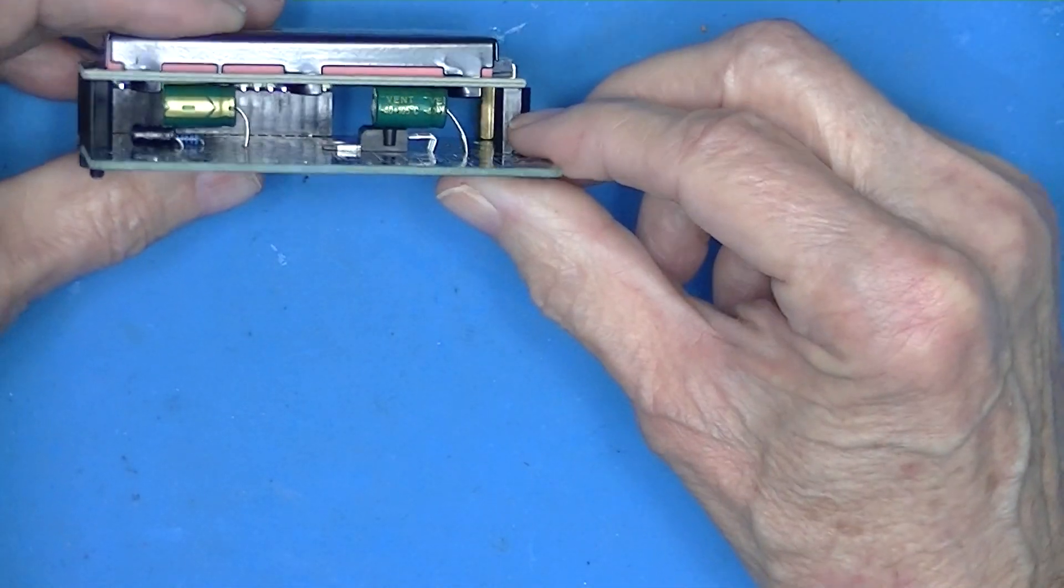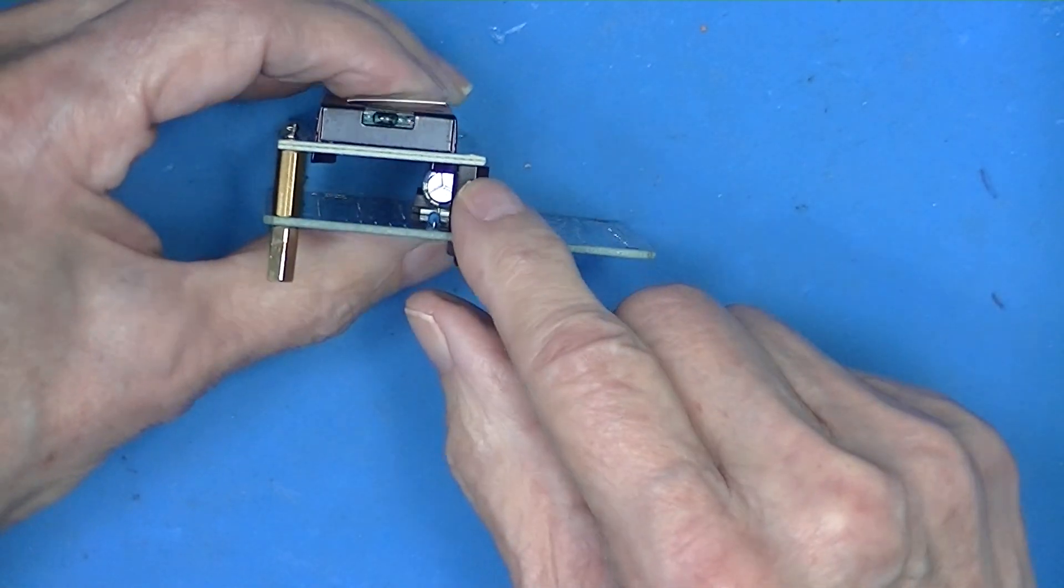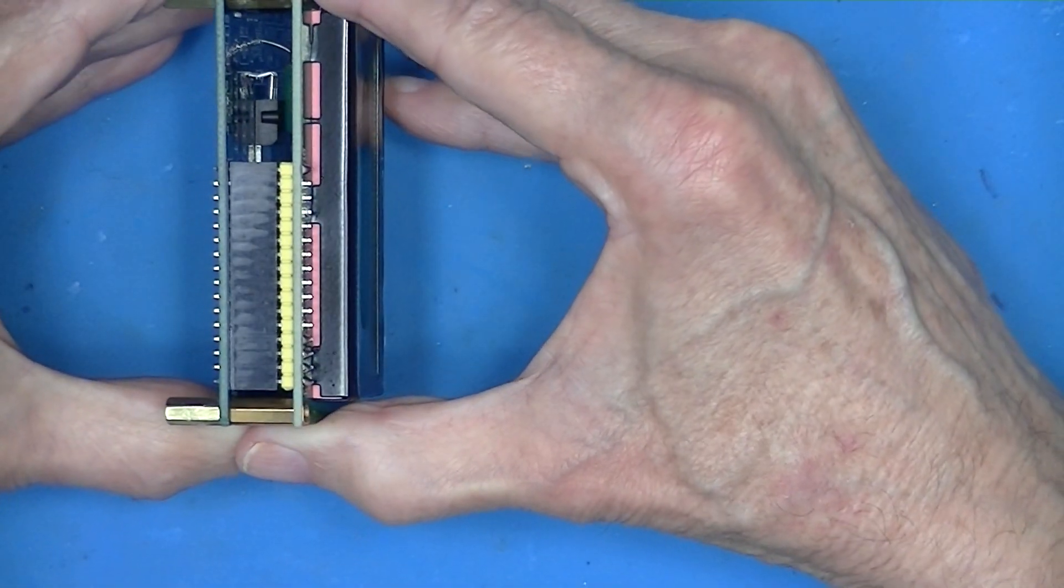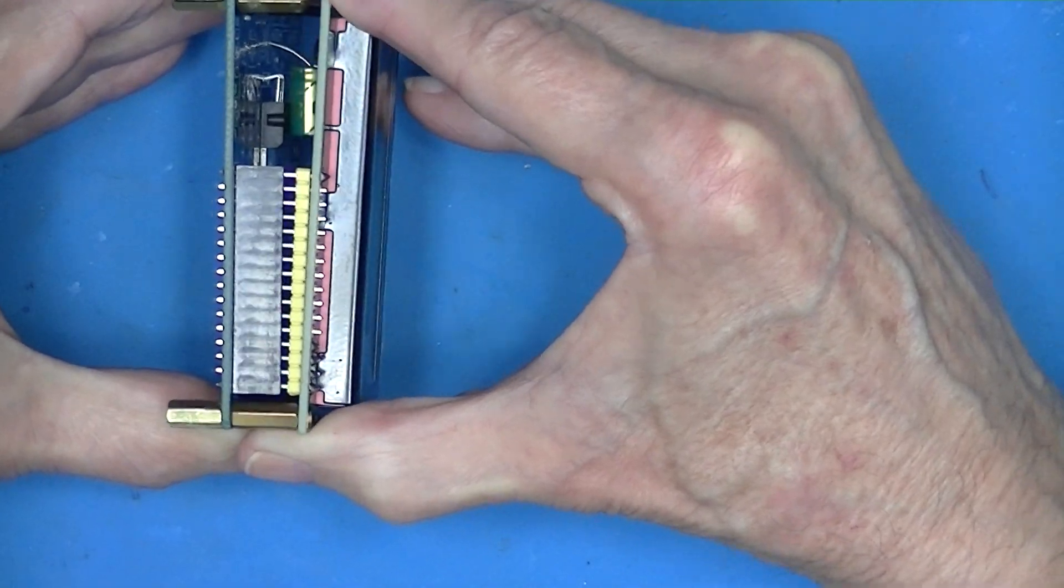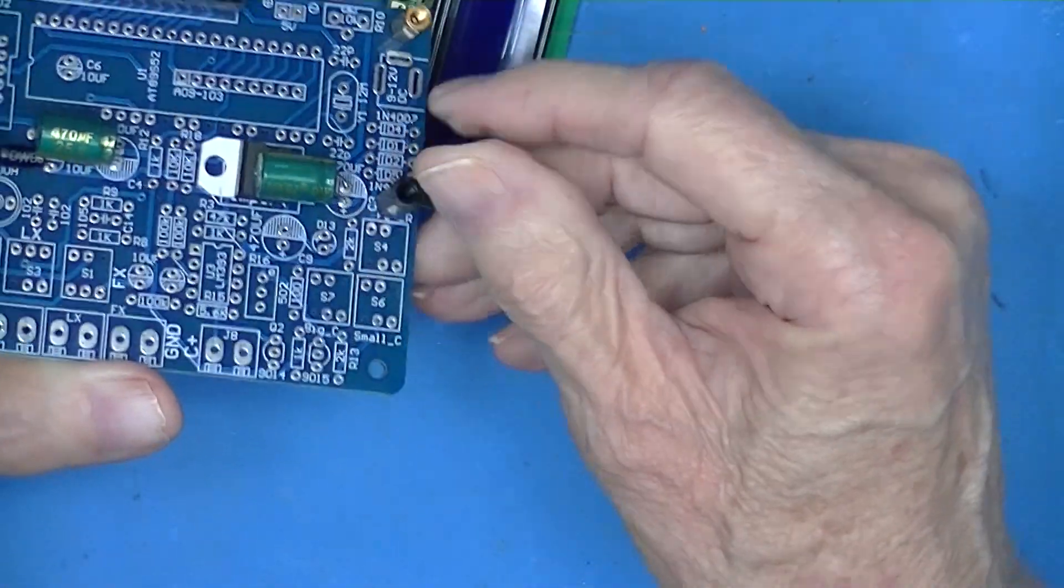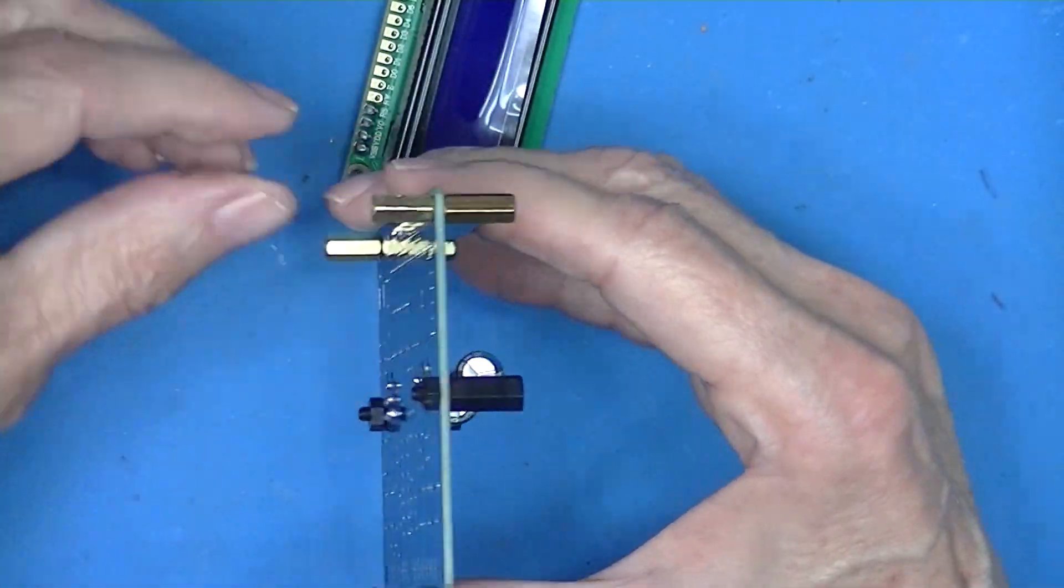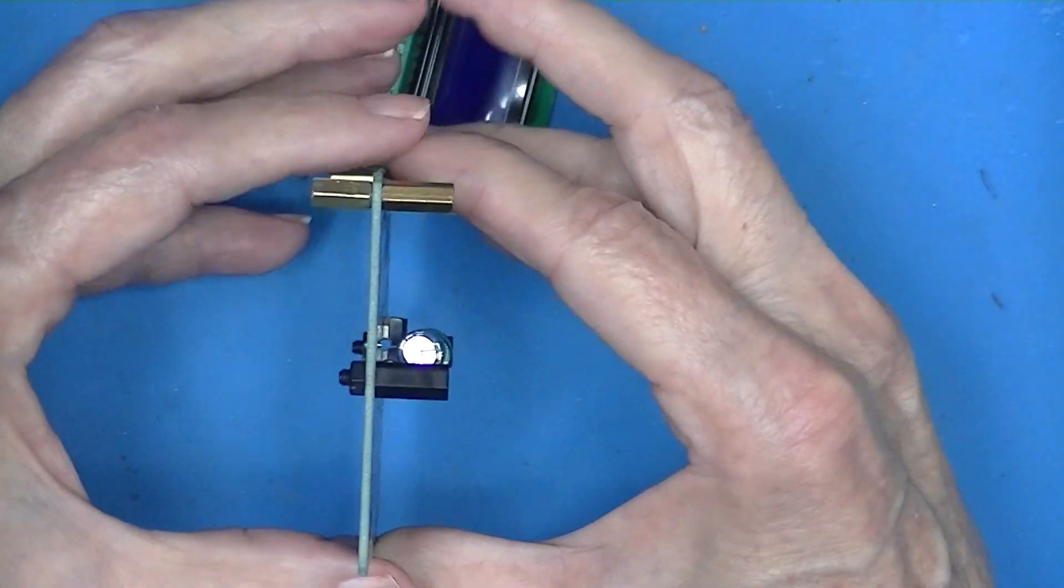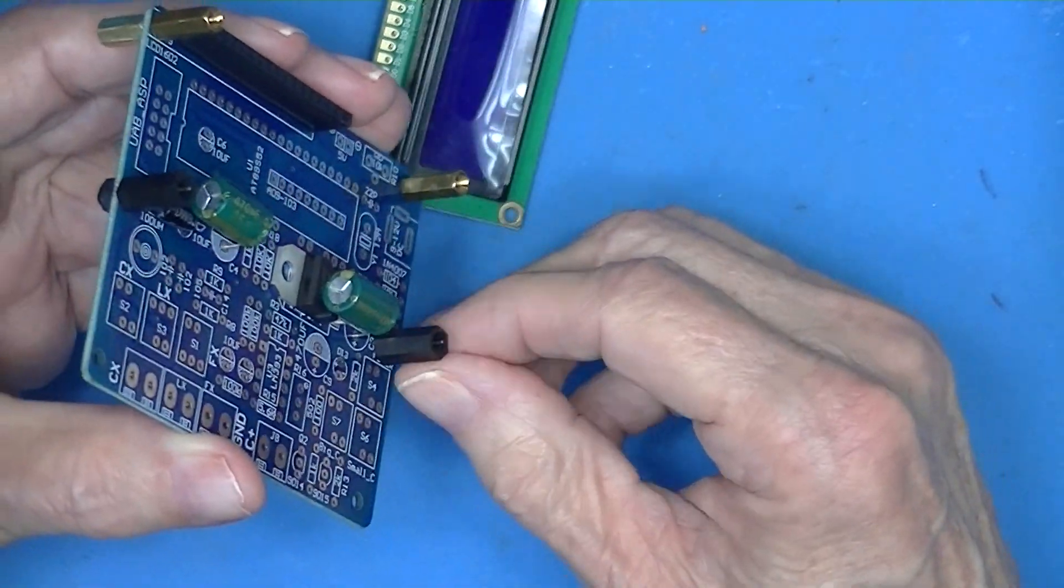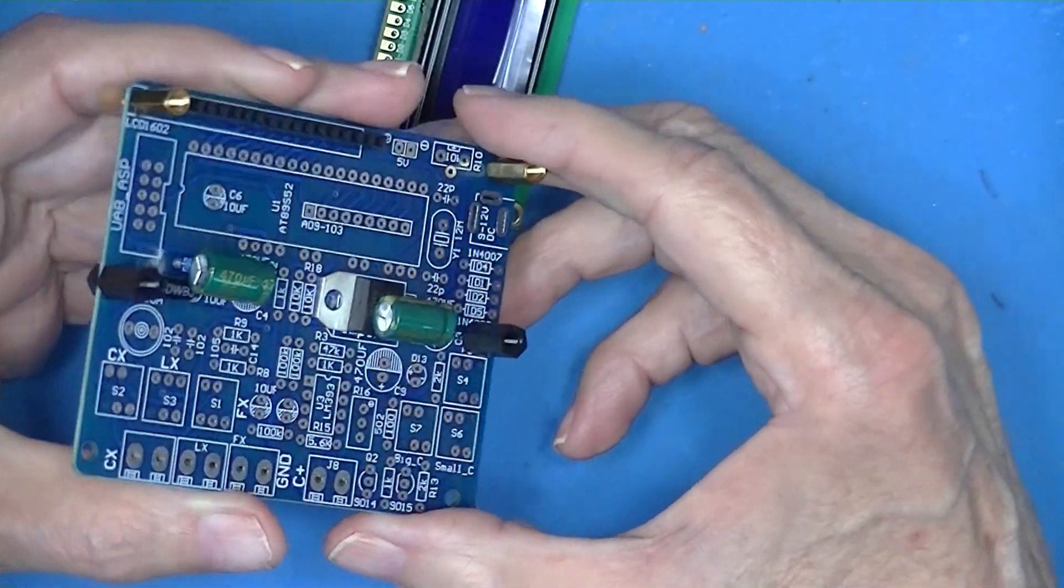Now you'll notice that I have installed standoffs, four of them. I strongly recommend if you anticipate building this kit that you acquire four of these standoffs. Now these standoffs are included in the kit, and two for down here. These standoffs and the four screws on the top are not part of the kit.